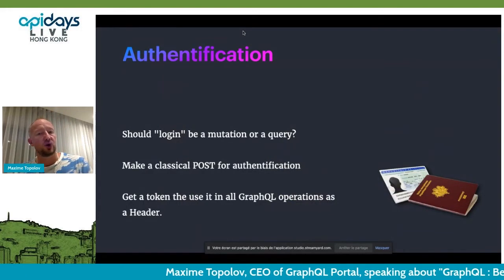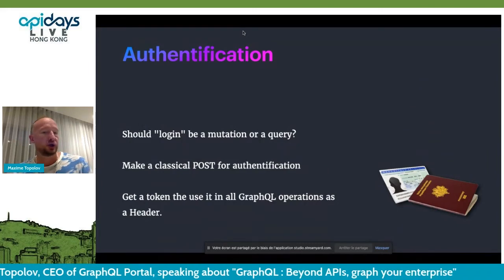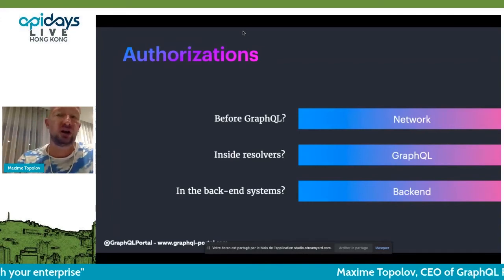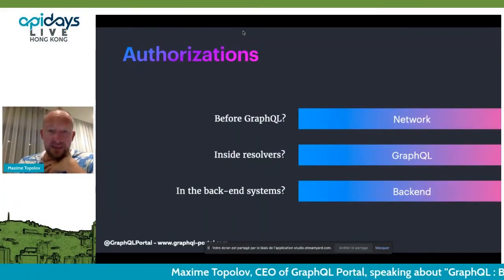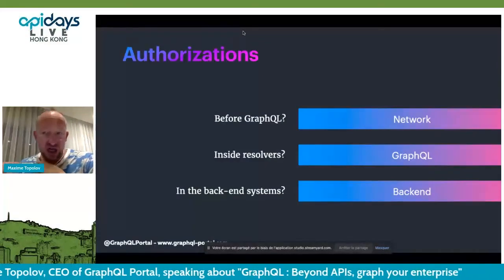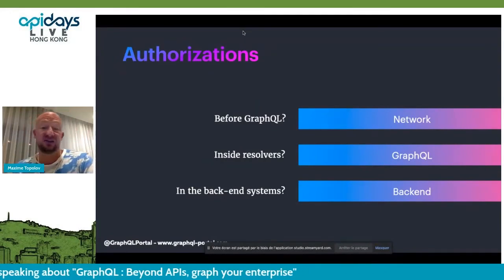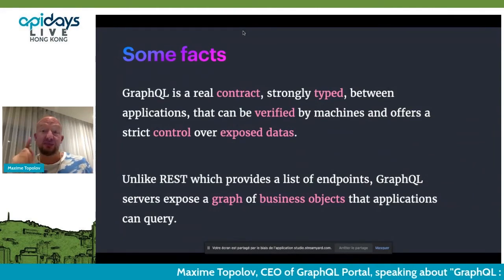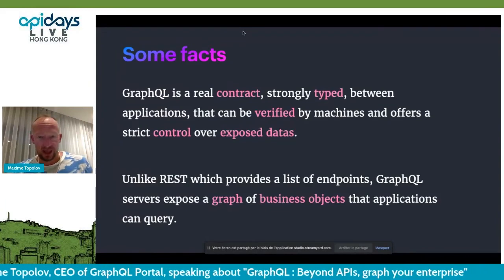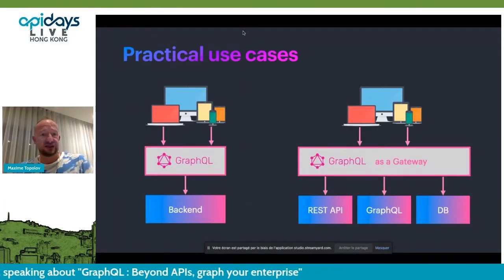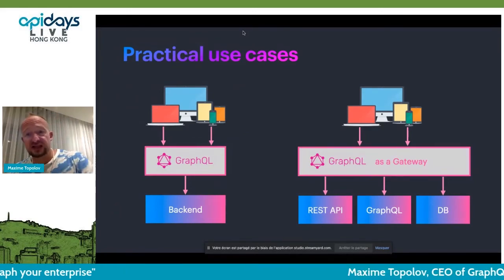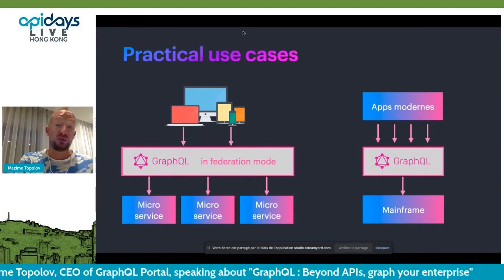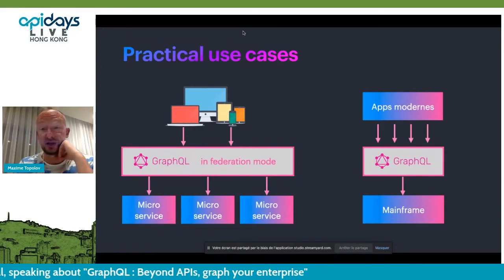On authentication — you can do it classically: POST authentication, get a token, and send it through all GraphQL operations. Authorization is a bigger, more complicated problem, usually done inside the backend system. As you master GraphQL, you can add authorization logic inside the resolvers. To sum up: GraphQL is a real, strongly-typed contract between applications that can be machine-verified, offering strict control over exposed data. Practical use cases include using it as a gateway between your backend and frontend, running a GraphQL gateway over your REST APIs and other backend systems, using federation mode to federate microservices together, or even using it to migrate from existing mainframe systems.